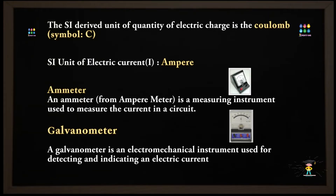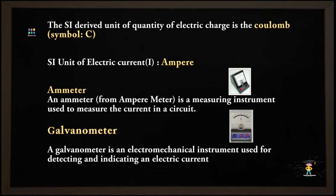The instrument used to measure electric current is the Ammeter. There is also the Galvanometer — the Galvanometer is different. The Galvanometer will measure current flow.